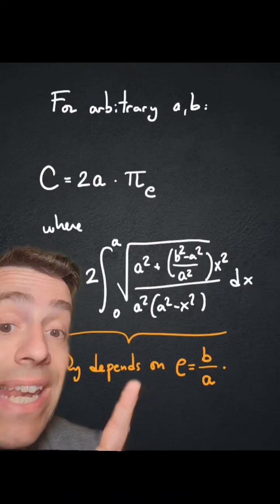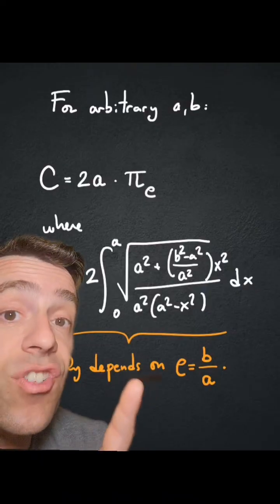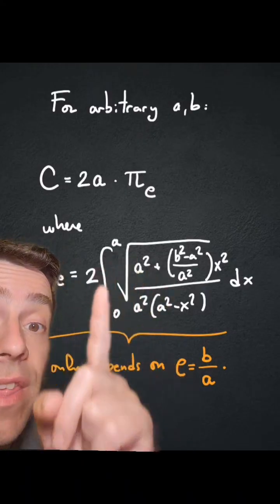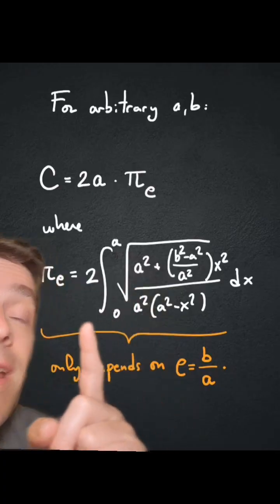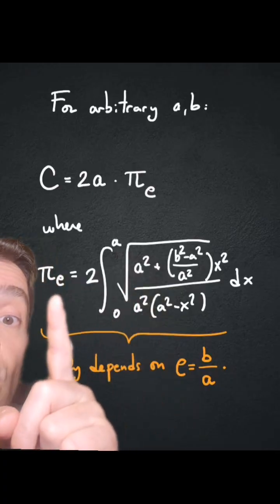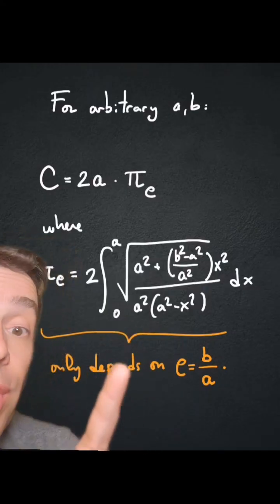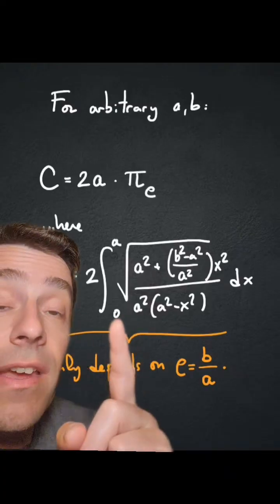So if you define e to be b divided by a, the eccentricity of the ellipse, and you define pi sub e to be this integral in terms of a's and b's, it turns out one can prove that pi sub e only depends on the quotient b divided by a, so it only depends on the value of e, the eccentricity.